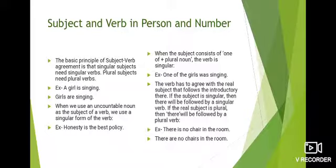When we use an uncountable noun as the subject of a verb, we use a singular form of the verb. Example: 'Honesty is the best policy.' Here, honesty is the subject and it is an uncountable noun — we cannot count honesty. So 'is' is the singular verb used with this uncountable noun subject.